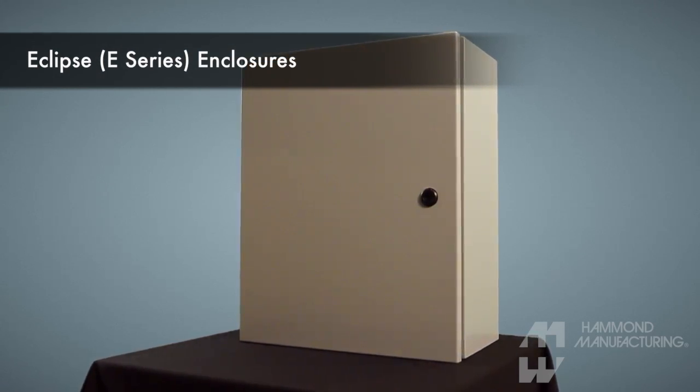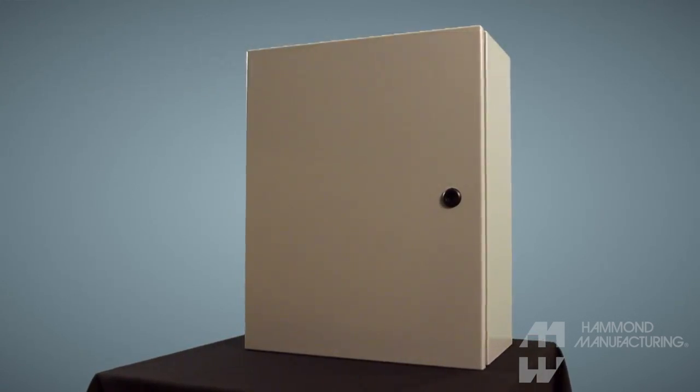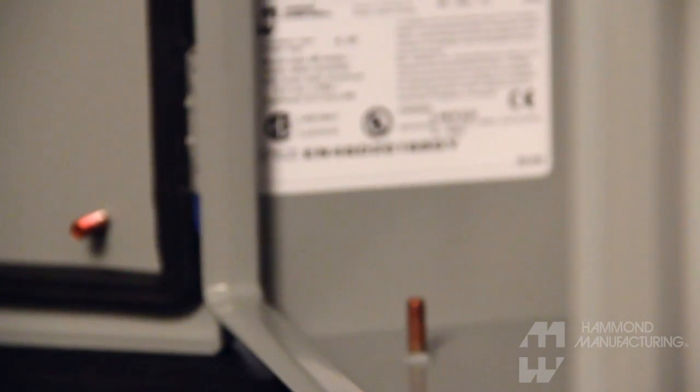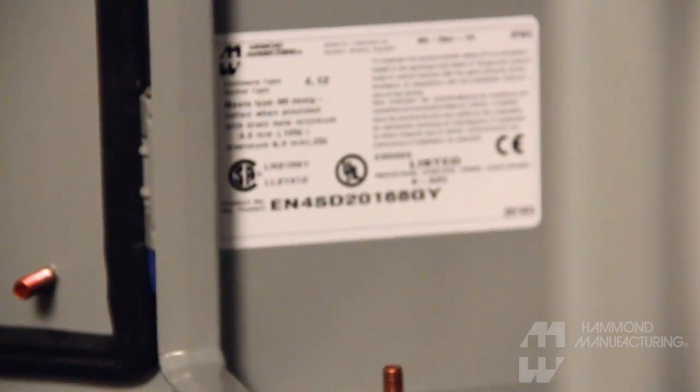Hammond Eclipse series enclosures are ideal for numerous applications such as instrumentation or control cabinets. The Eclipse can be used indoors or outdoors as it meets IP66 and carries Type 3R,